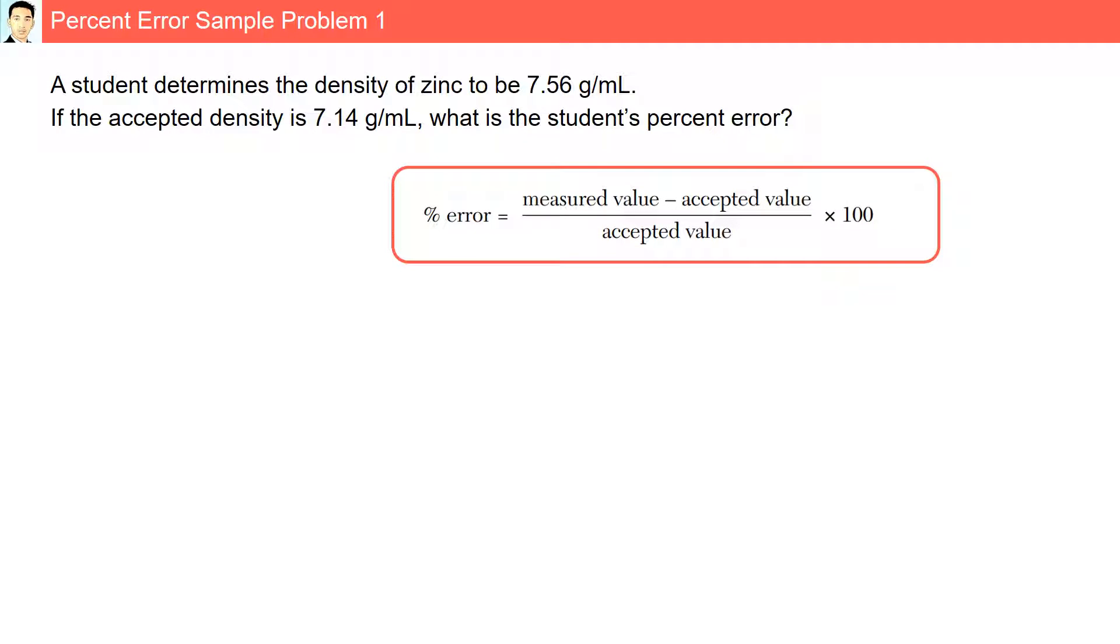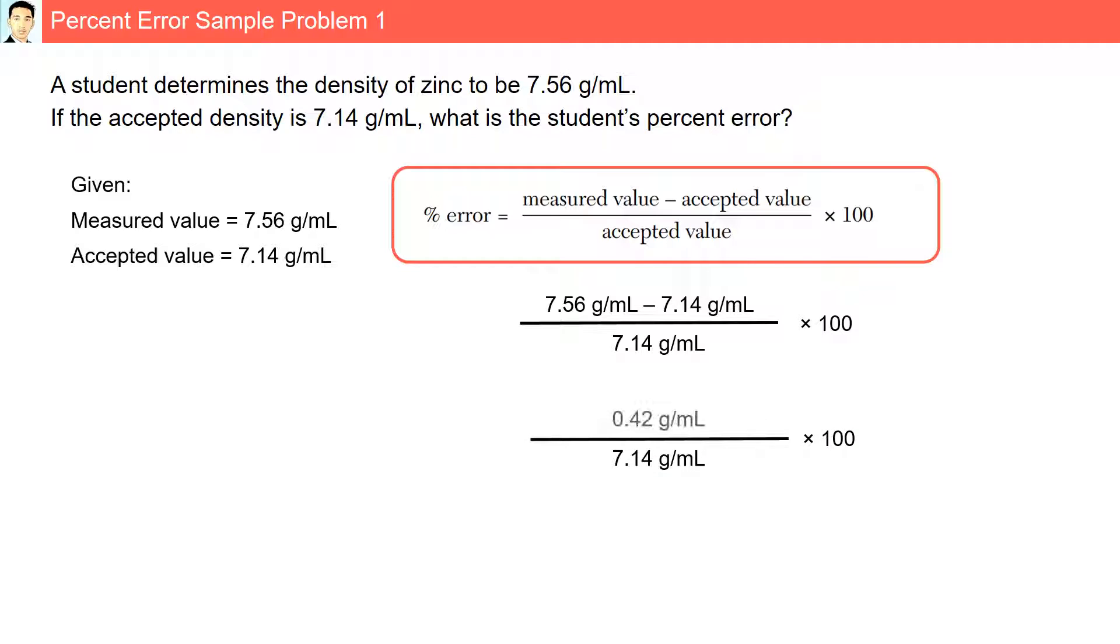The first step is to identify the formula we need to use, then identify the given. Here the measured value is 7.56 grams per mL, and the accepted value is 7.14 grams per mL. Plugging it into our formula: the measured minus the accepted, divided by the accepted, multiplied by 100. Here we have our final answer, 5.88%.